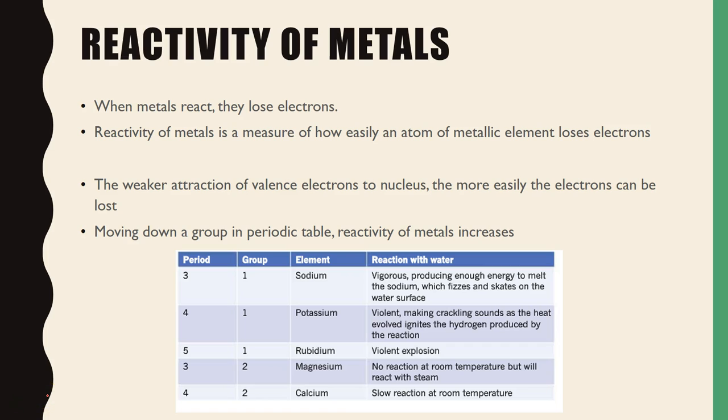So when metals react, they lose electrons and the reactivity is a measure of how easily they will lose their electrons. If you more easily lose electrons, it will have a higher reactivity. If you less easily lose your electrons, it will have a lower reactivity.